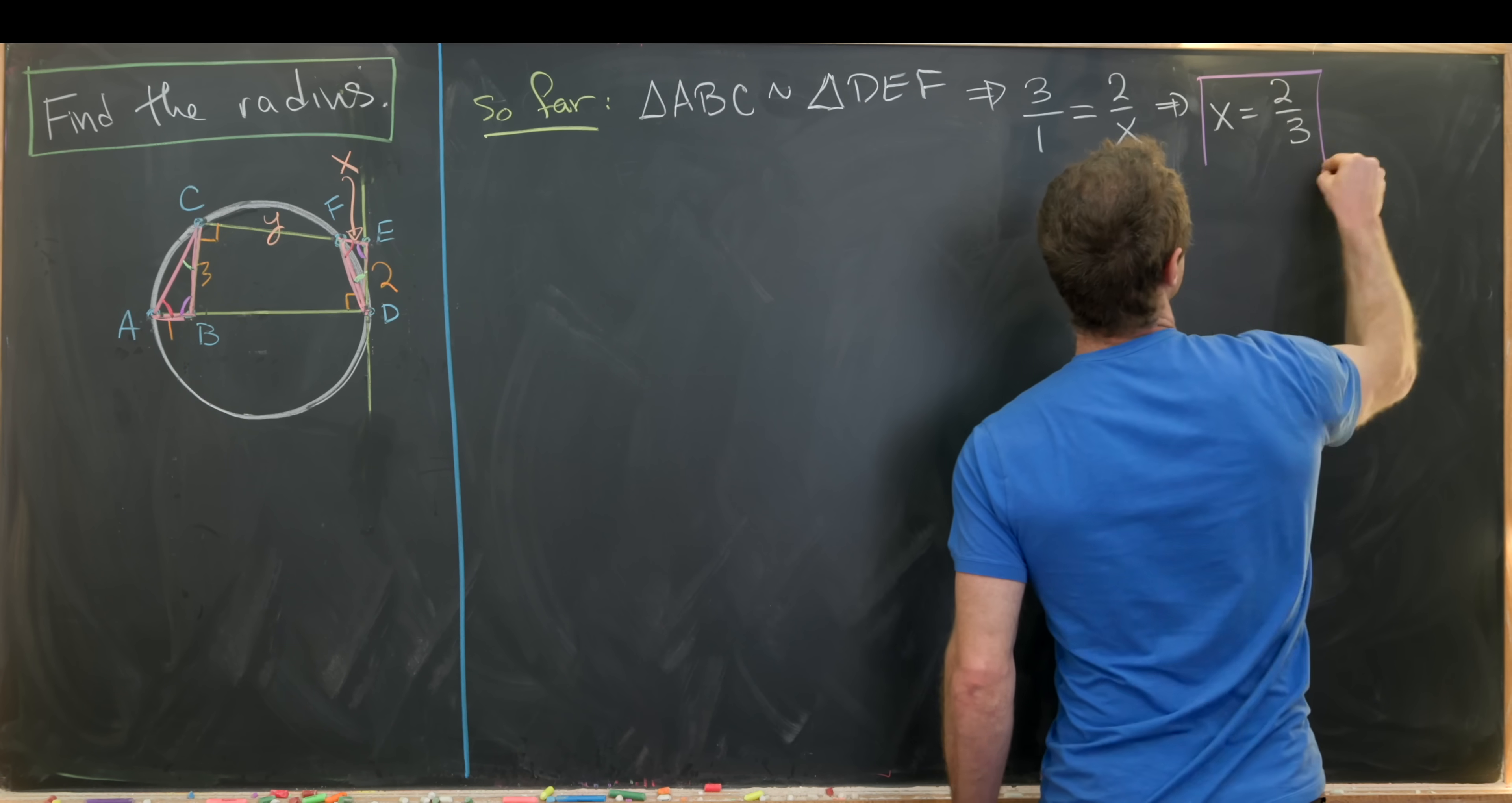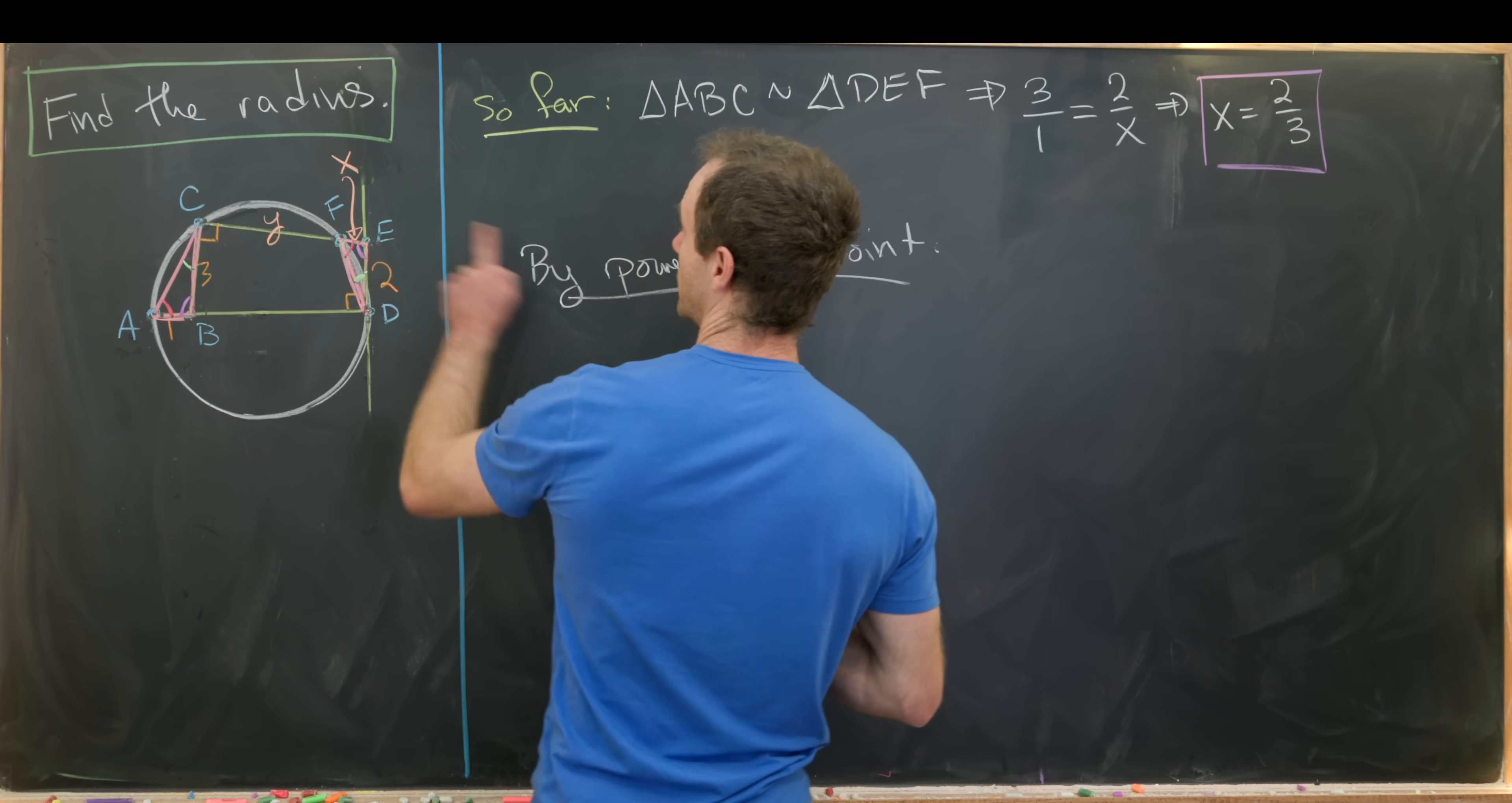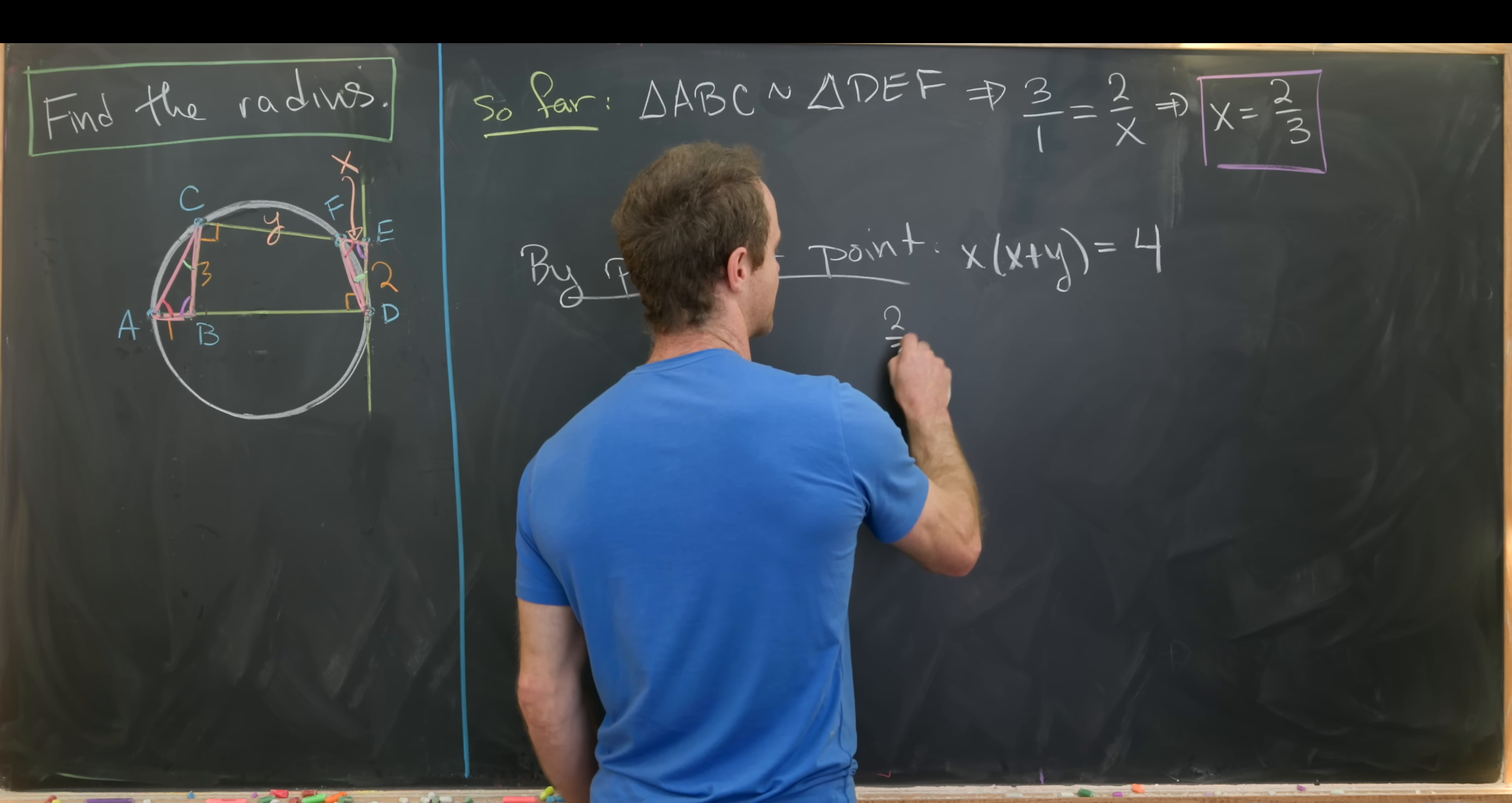And then where can we go from here? So now we're going to use something called the power of the point theorem. So by power of the point, and this is going to be applied to the point E, we know that X times X plus Y is the same thing as 2 times 2, which is 4 here. But we know what X is, it's 2 thirds.